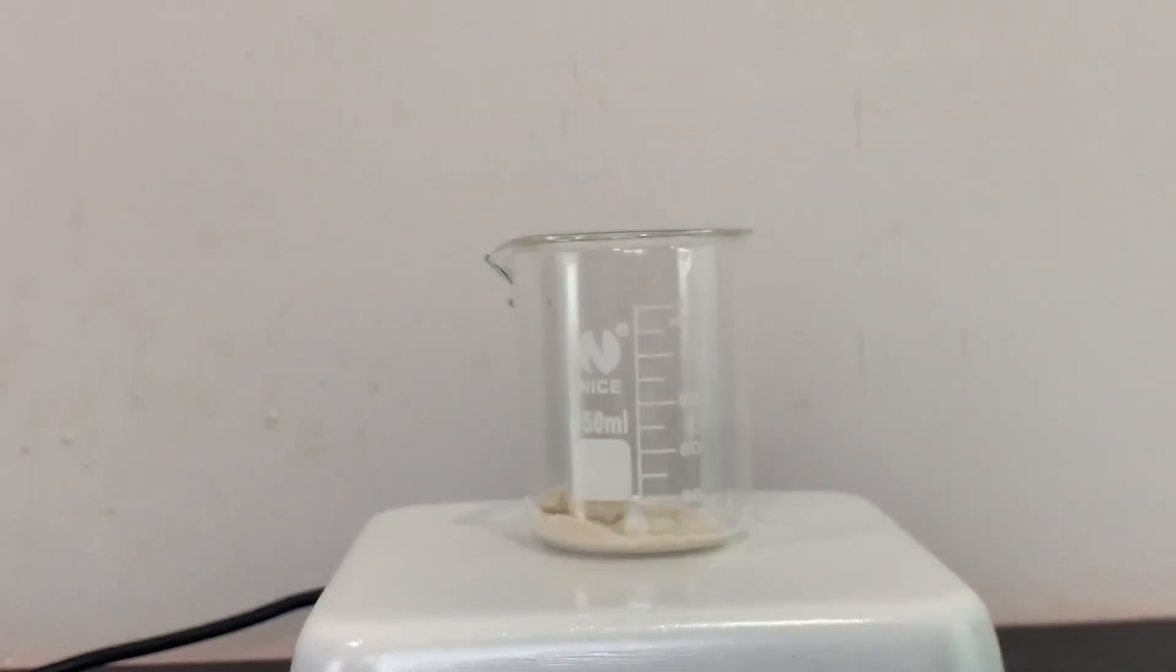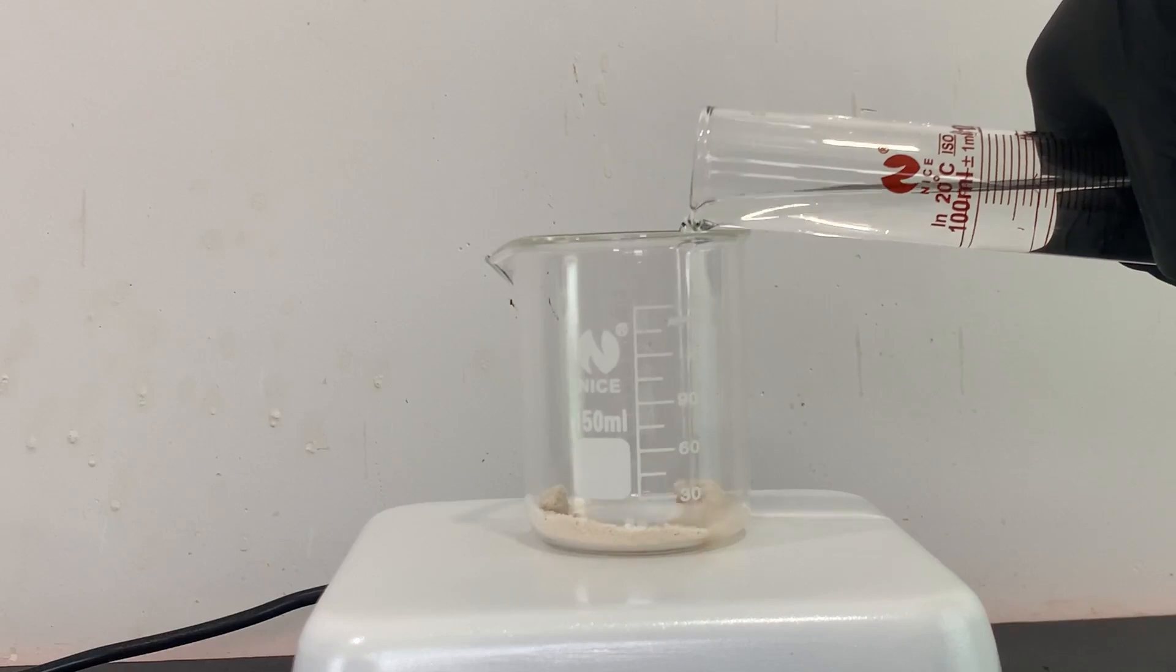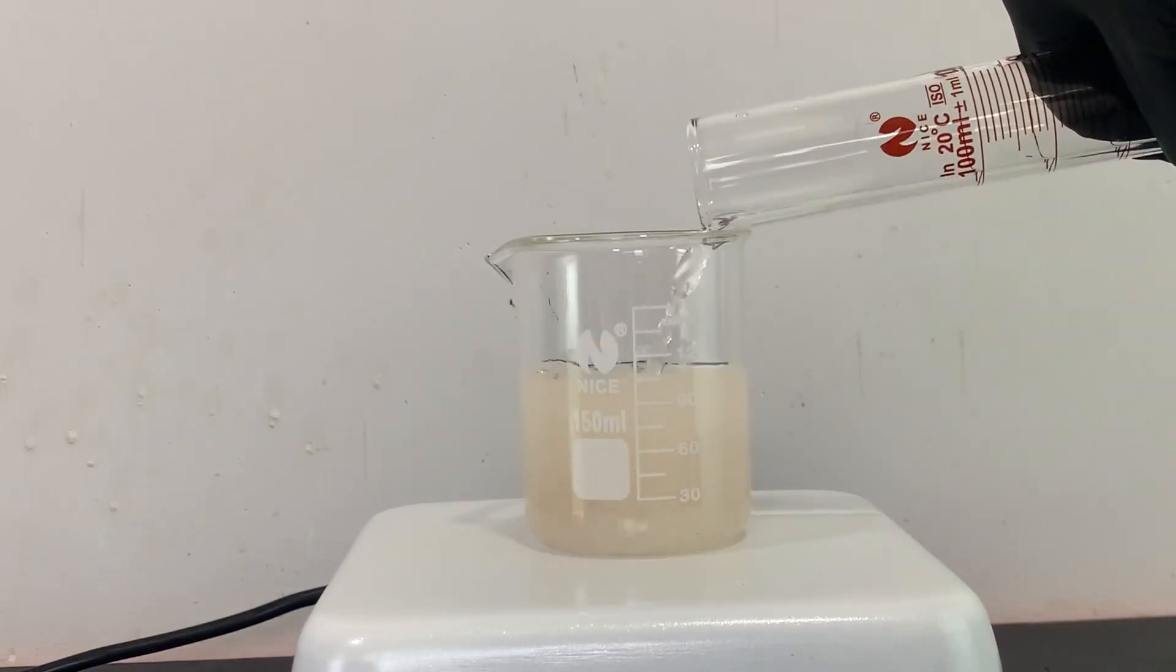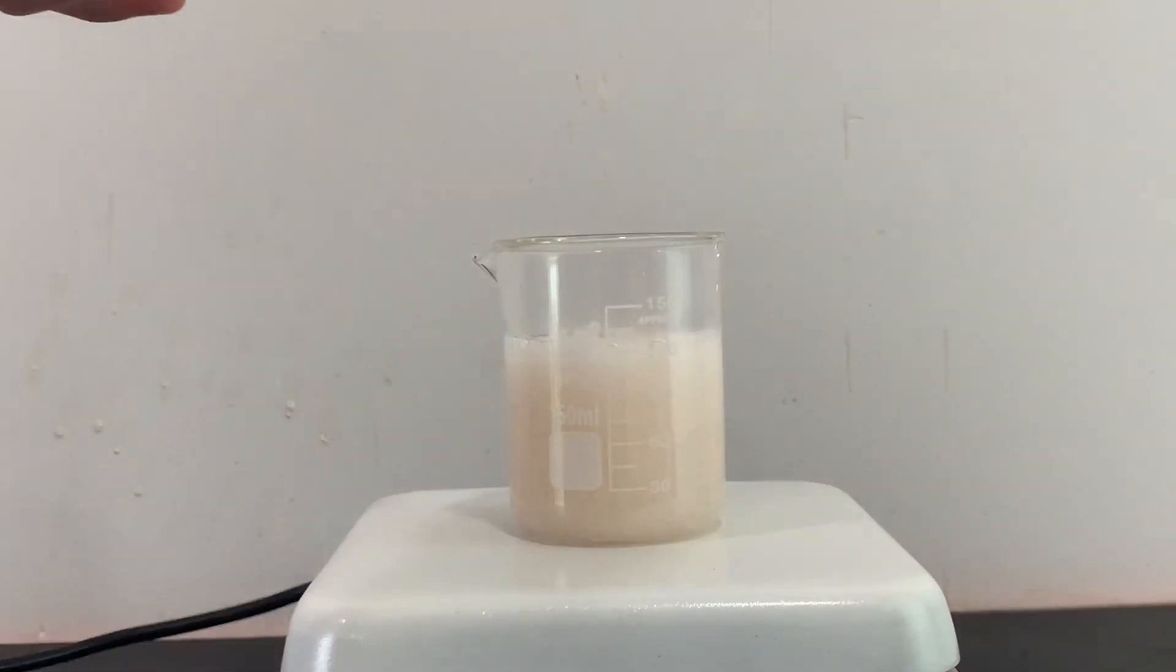I turned on the magnetic stirring and poured in 100 milliliters of water. I then slowly started adding 1.2 grams of sodium carbonate.